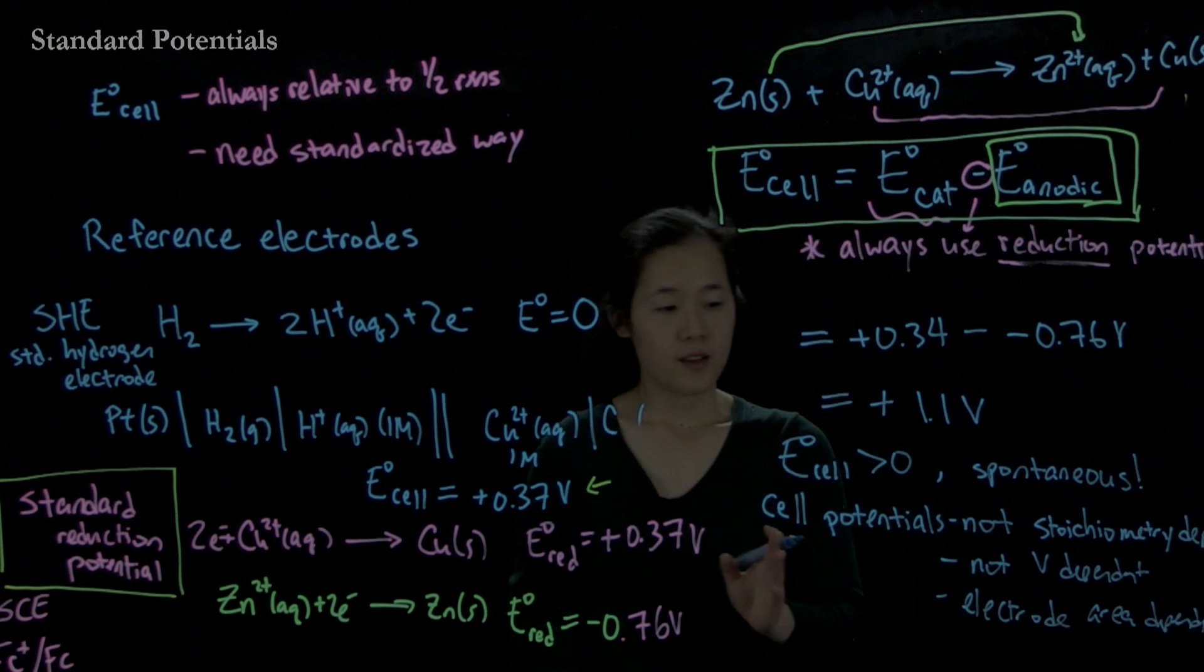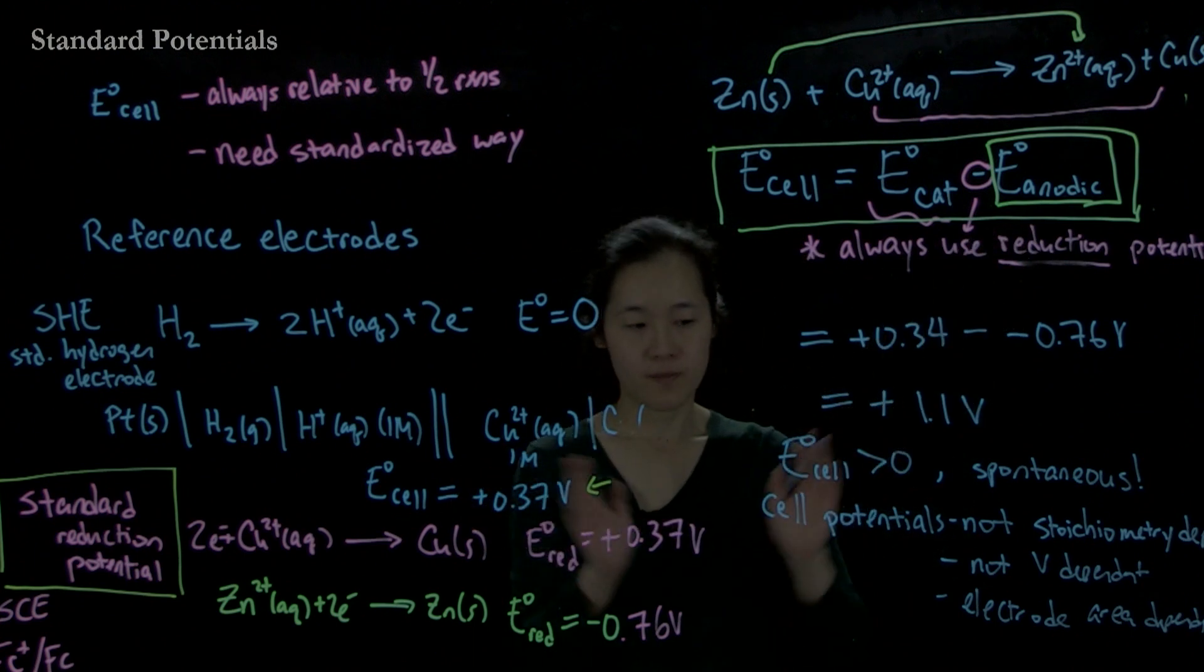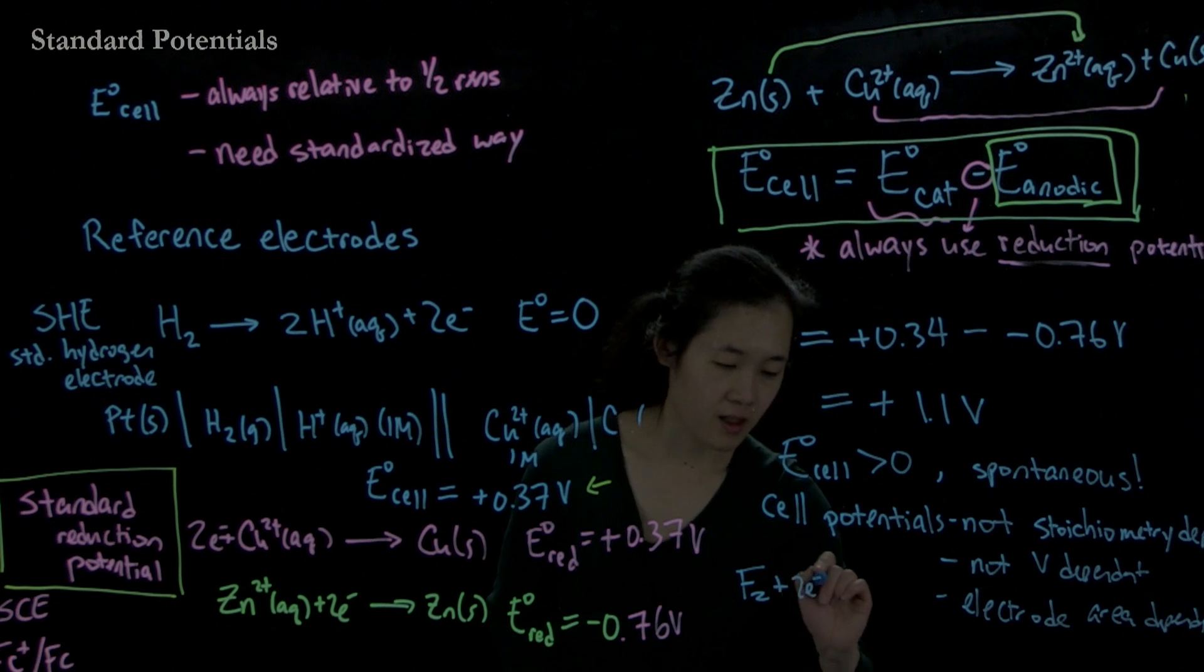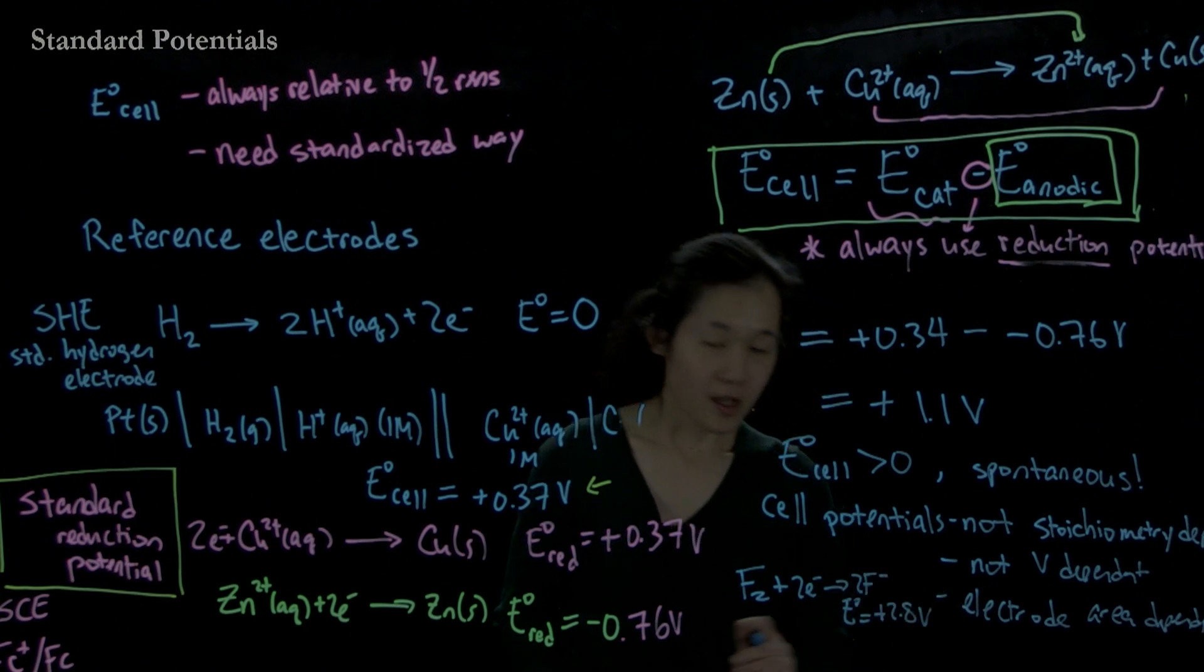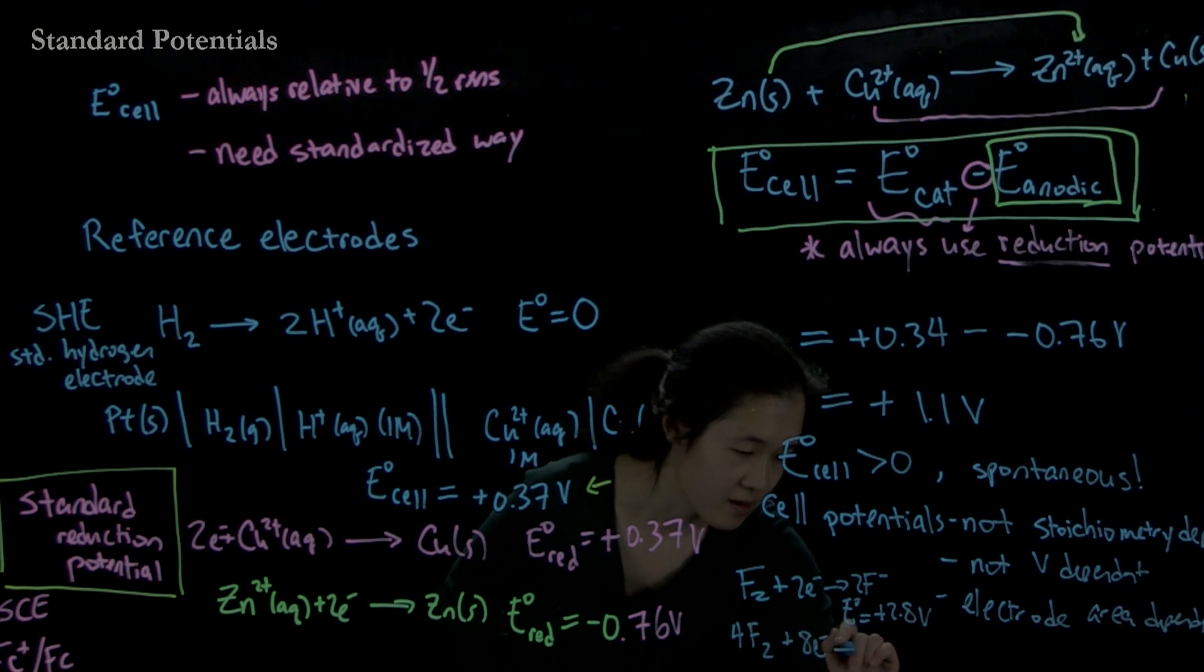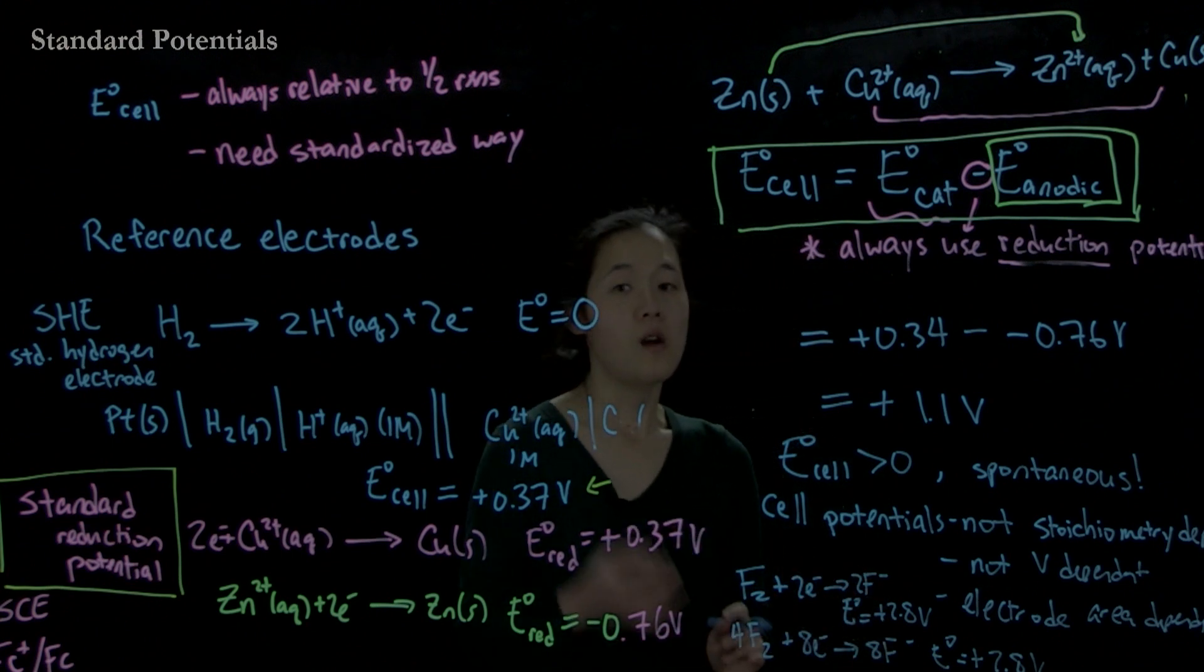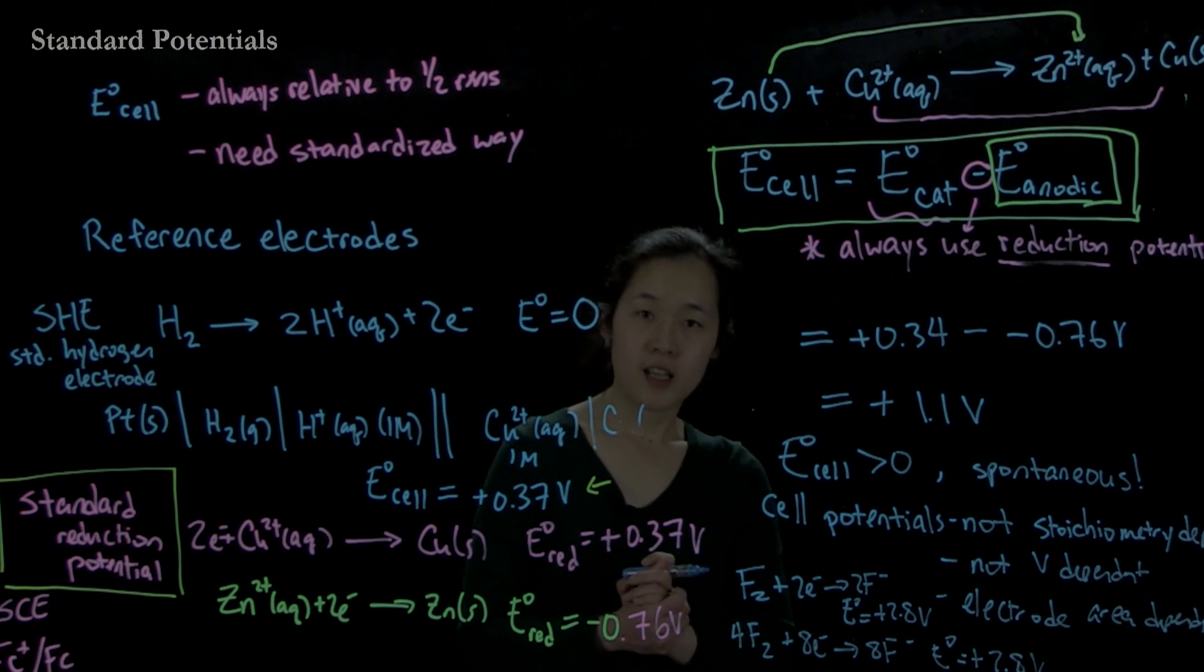These are state functions that you just contract directly without worrying about how many electrons are being transferred. So for example, if you want to think about that fluorine getting reduced, going to two fluorides. Remember, this E0 was plus 2.8 volts. If we had four fluorines getting reduced by eight electrons, going to eight fluorides, this E0 is also plus 2.8 volts. So it's not dependent. What will be stoichiometry dependent and everything else dependent is delta G. And we'll talk about that in the next video.